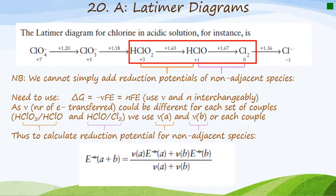Now let's have a look at what would happen if we looked at more than one species. So I want to go from the chlorous acid to chlorine, chlorine gas. We cannot simply add the reduction potentials of non-adjacent species. In other words, I can't take this value here and add it to this value here.